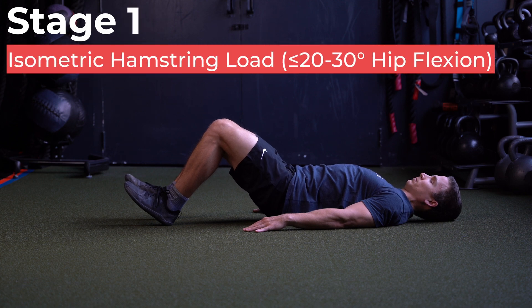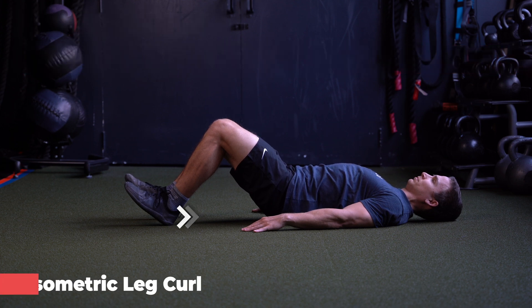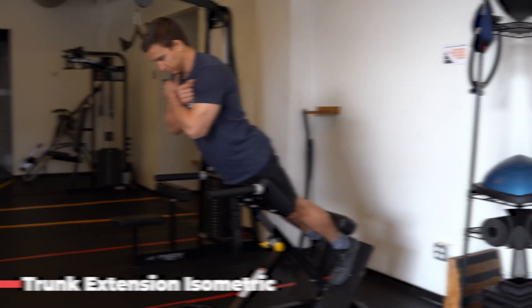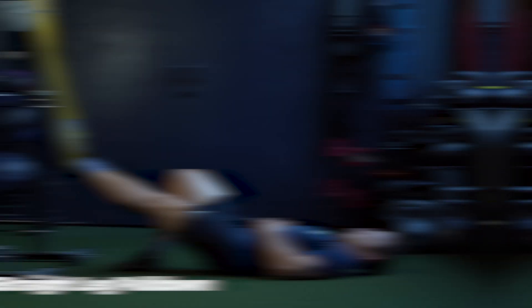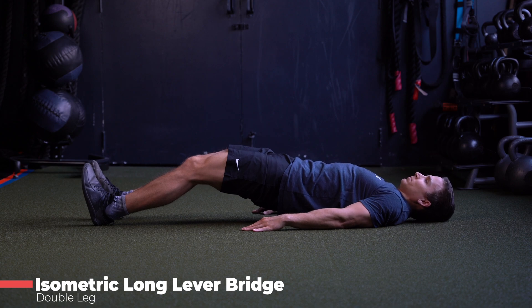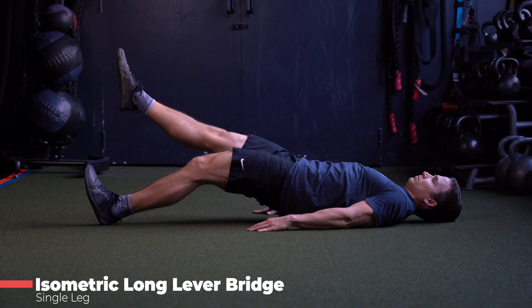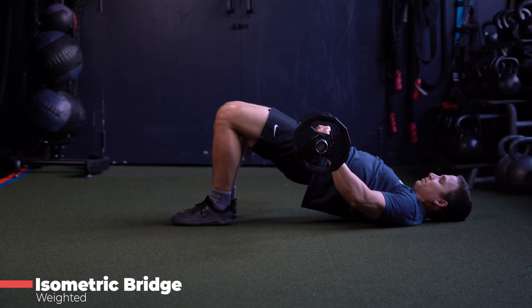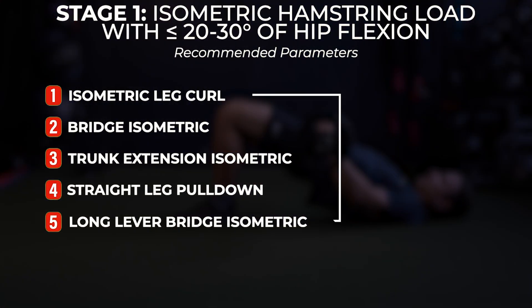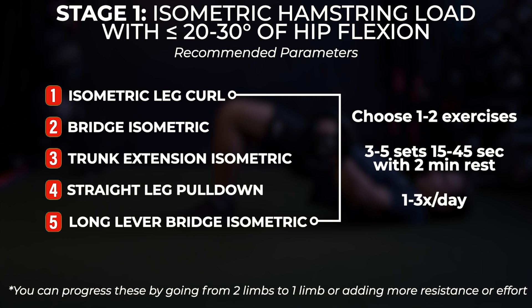Stage 1: isometric hamstring load at 20 to 30 degrees of hip flexion or less. Options include isometric leg curl, bridge holds with the hip in neutral, trunk extension, straight leg pulldown, and isometric long lever bridging. You can progress these by going from two limbs to one limb or adding more resistance or effort. Pick one or two exercises to be performed for three to five sets of 15 to 45 seconds, one to three times per day — challenging but tolerable, with roughly a two-minute rest between sets.